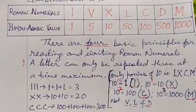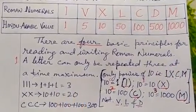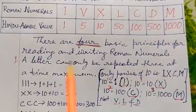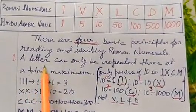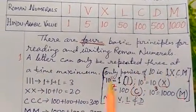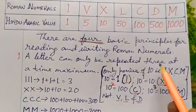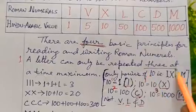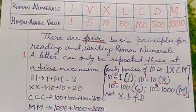Now there are 4 basic principles for reading and writing Roman numbers. The first principle: a letter can only be repeated a maximum of 3 times. You can use any letter 3 times but not more than that.